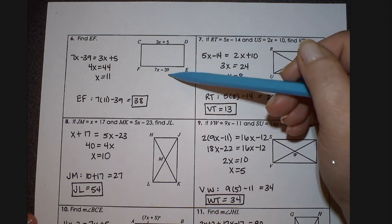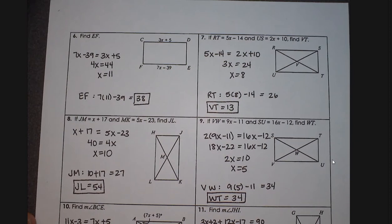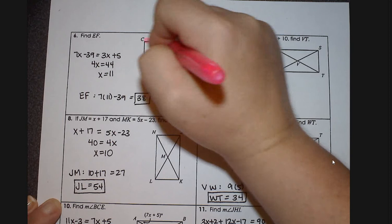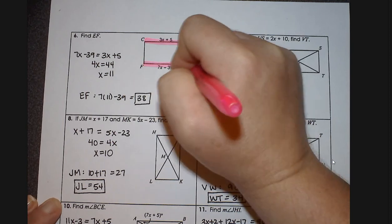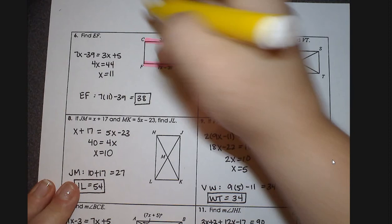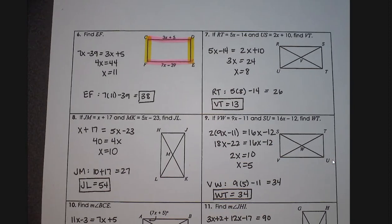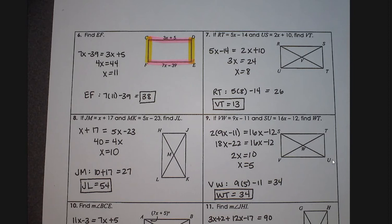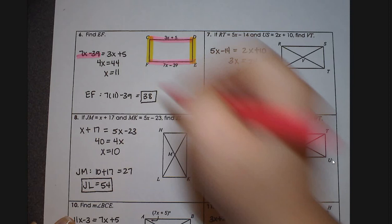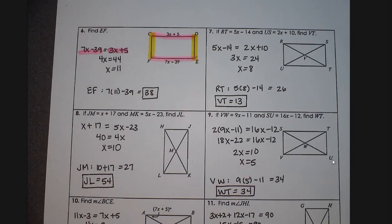So that's where this is coming from. 7x minus 39 is going to equal 3x plus 5. So if I were color coding, just for kind of going back to the way we do things in class. Those pieces are congruent. So when I talk about 7x minus 39, because that's EF, then I need to say, since they're both pink, they will be congruent.